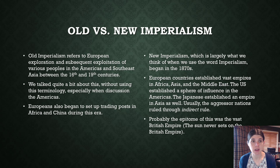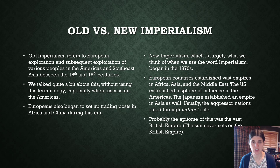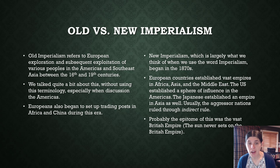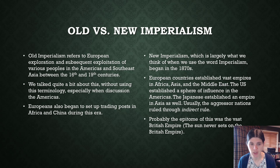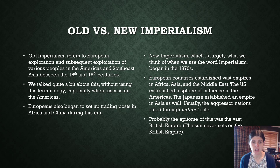Now we want to talk about old versus new imperialism. Old imperialism refers to European exploration and subsequent exploitation of various peoples in the Americas, Southeast Asia, and Africa between the 16th and the 19th centuries. We talked a lot about this without using this terminology, especially when discussing the Americas. Europeans also set up trading posts in Africa and China during this era.